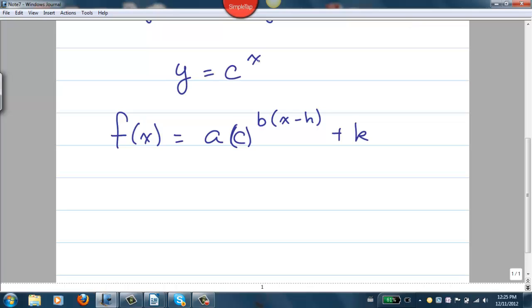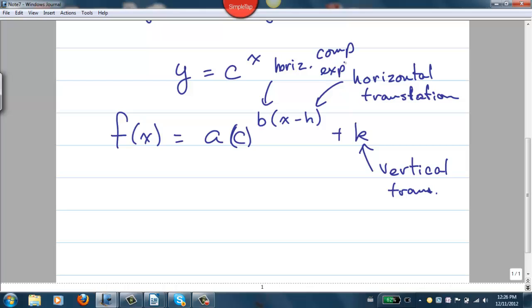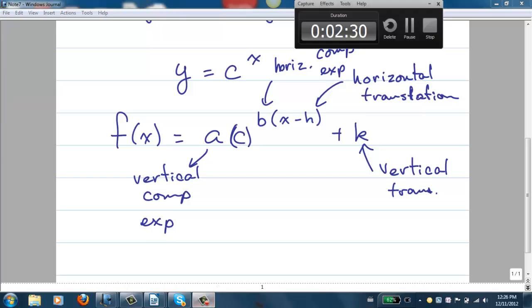So far we've looked at the exponential function y equals c to the power of x. Now we're going to see how different factors like h, k, a, and b affect things. h being a horizontal translation, k creates a vertical translation, b a horizontal compression or expansion, and a creates a vertical compression or expansion.